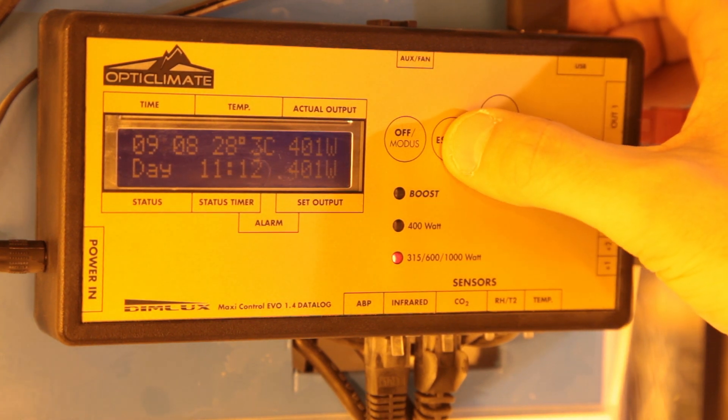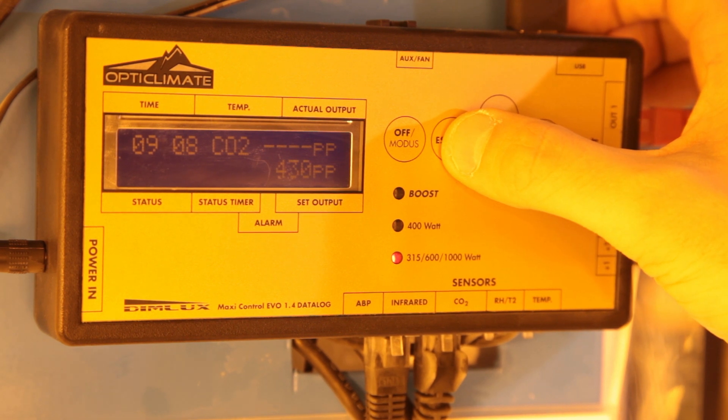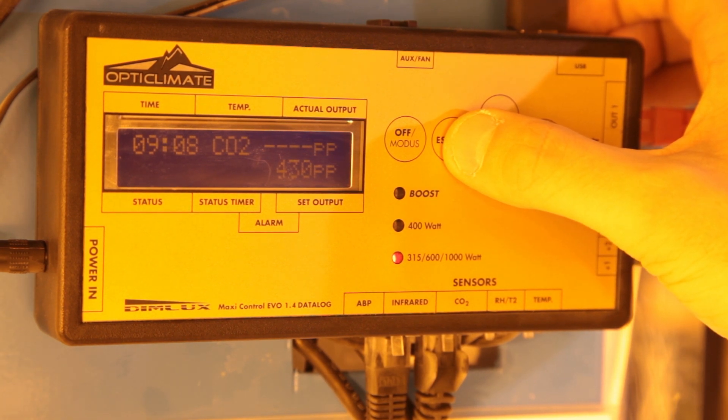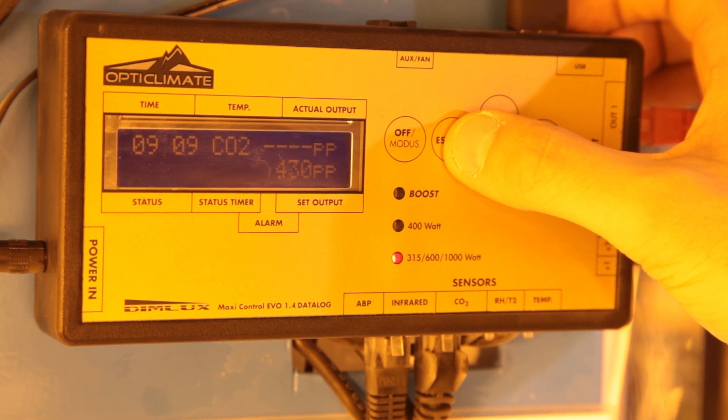The next screen displays information on CO2. To use this you'll need to be running a Dimlux CO2 sensor which measures CO2 concentrations in the air and switches dosing equipment on and off to maintain your chosen level. You can see that level displayed here along with the actual level in the room.